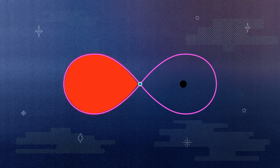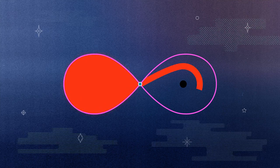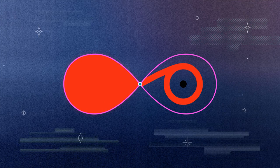At that point, material can spill over across the boundary at L1. The star stuff will then start falling towards the black hole.